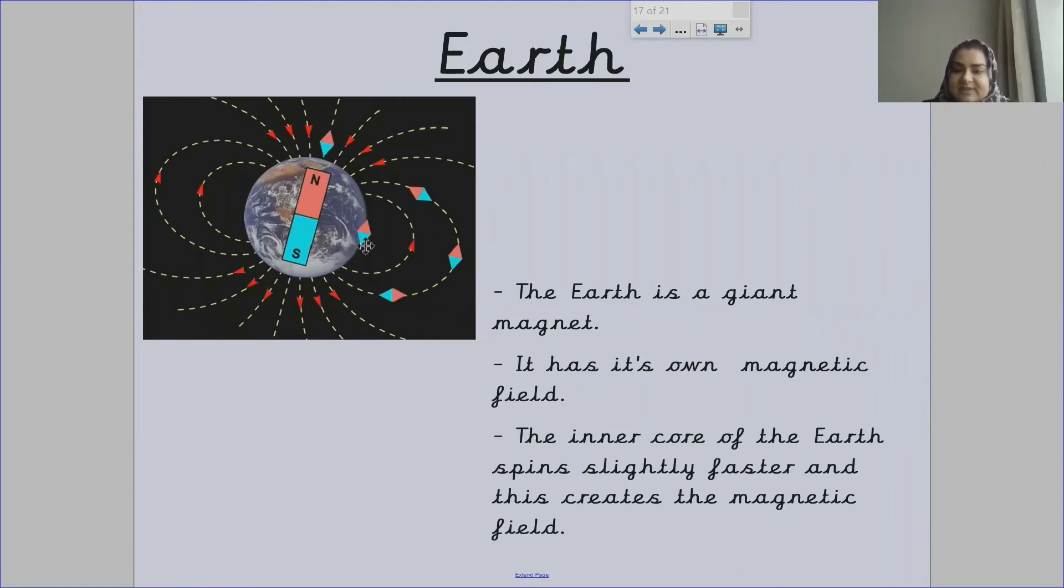The inner core of the Earth spins slightly faster and this creates the magnetic field. Do you remember in our geography lesson a few months ago, we were looking at Earth's core and we said that Earth's core is very hot. Underneath Earth's crust, including Earth's crust, all the layers are rock. But each layer turns more and more into a liquid rock. Earth's inner core creates a massive magnetic field, which makes Earth a giant magnet.